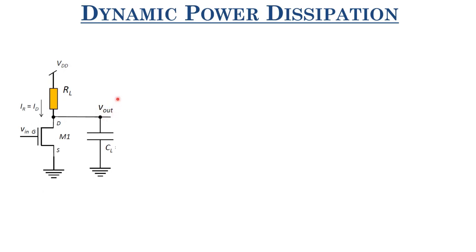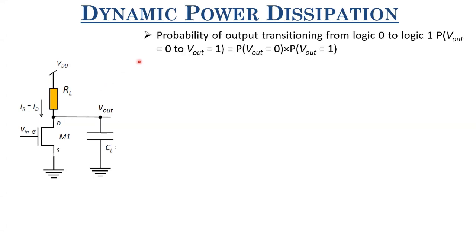The probability of the output transitioning from 0 to 1 is simply the probability that the output is 0 multiplied by the probability that the output is 1. This switching activity, alpha_{0→1}, is simply alpha_0 multiplied by alpha_1, where alpha_0 is the probability the output is at logic 0 and alpha_1 is the probability the output is at logic 1.